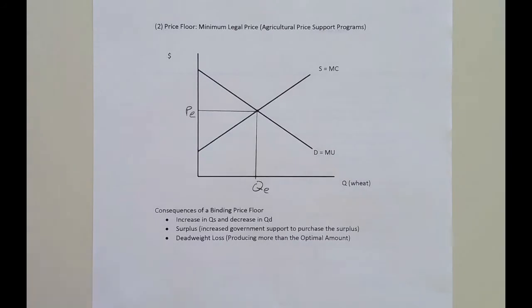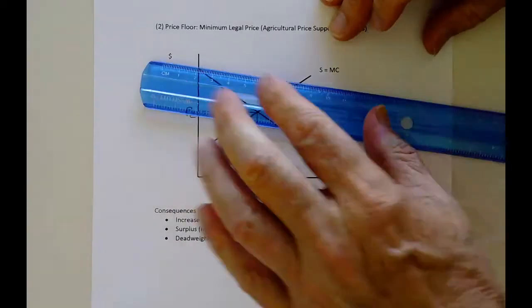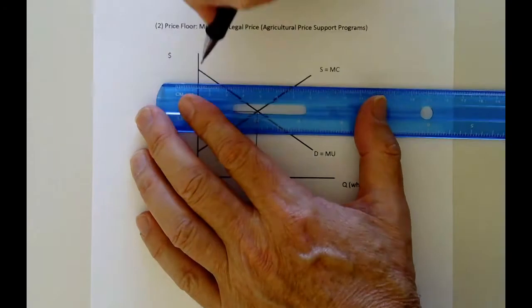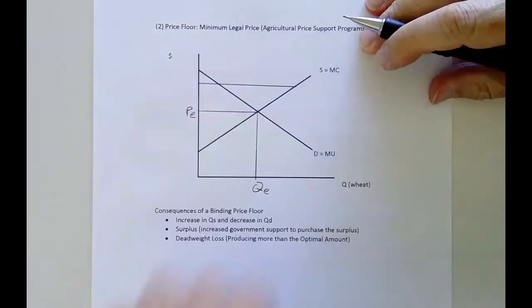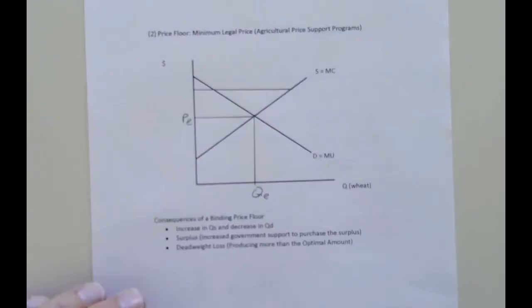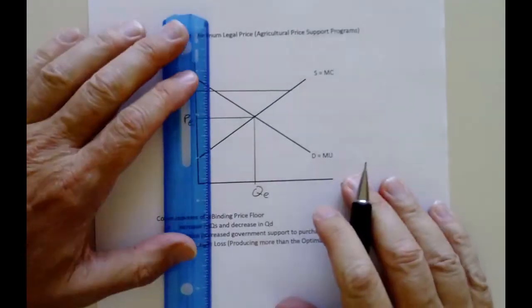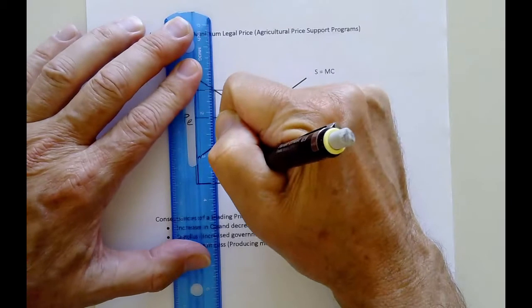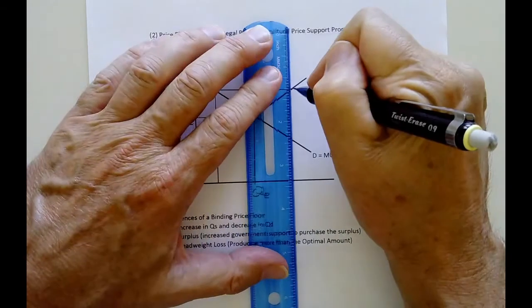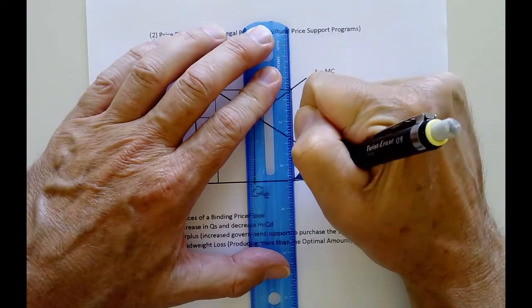This time it's going to be a different problem. The price is going to be pushed up, and for a binding price floor it has to be above equilibrium. And what the price floor does is, again, you can change the price through government policy, but you cannot repeal the laws of supply and demand.